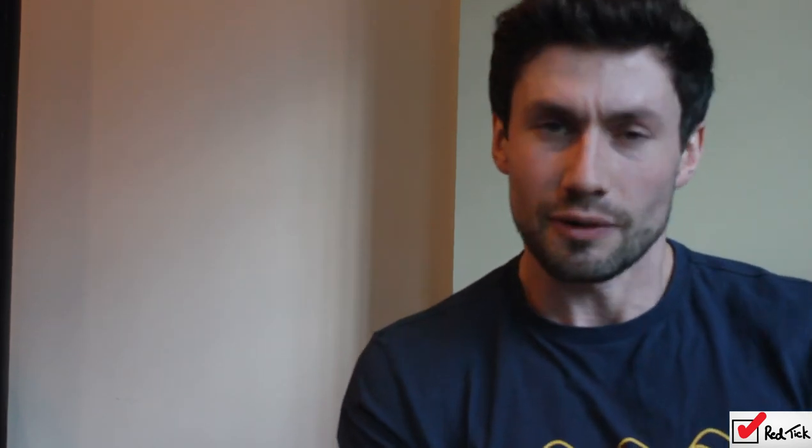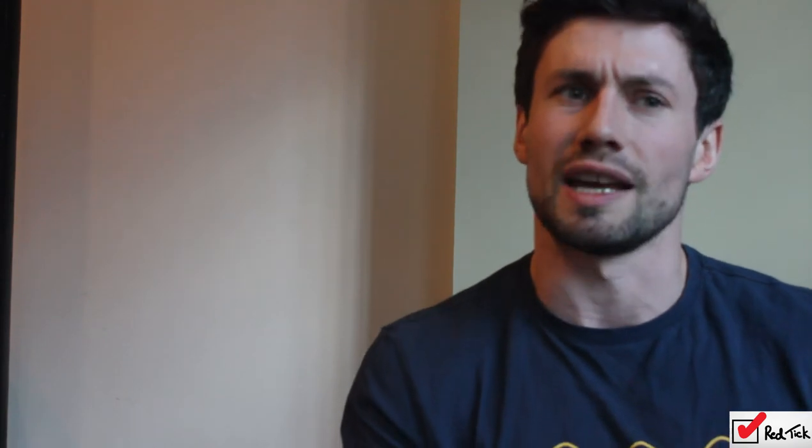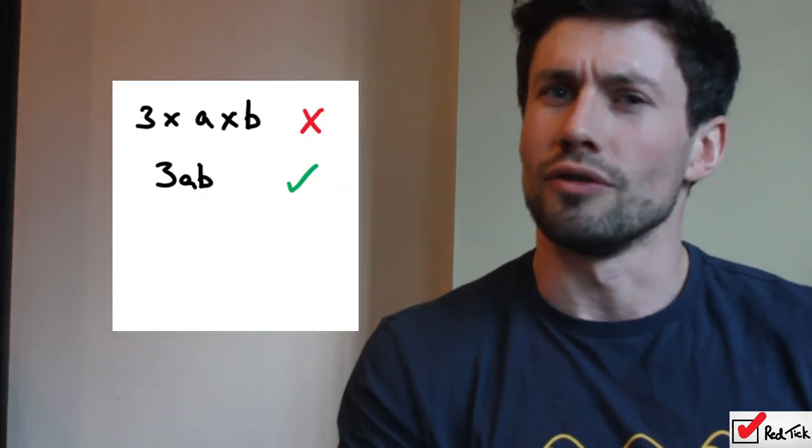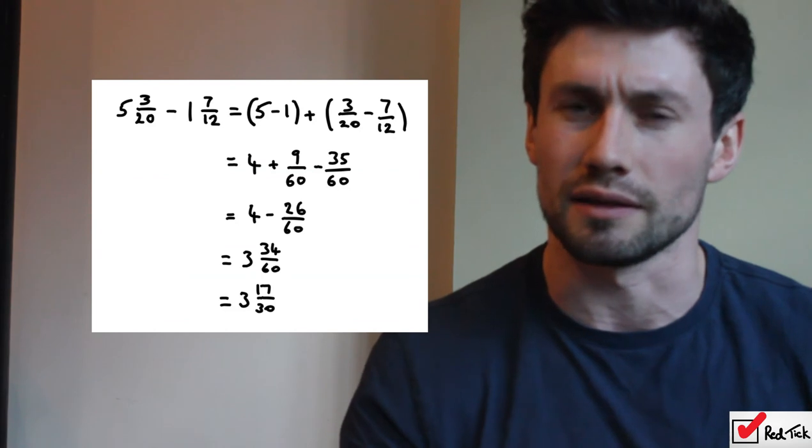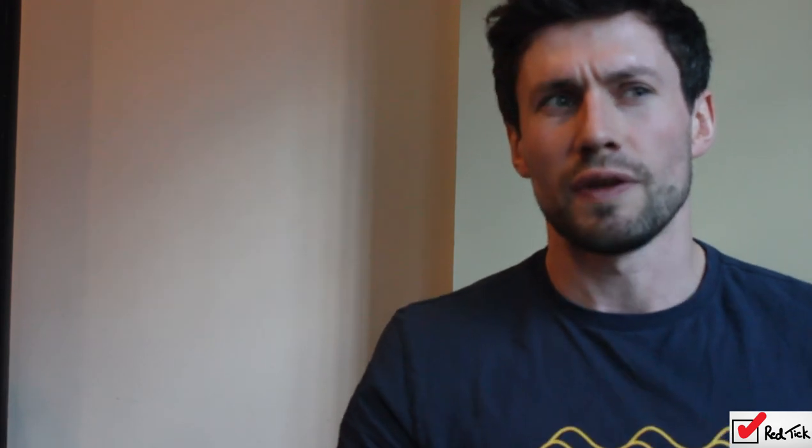If you do these four things — get rid of your division signs, use fewer multiplication signs, show your equations in the V-formation, and simplify your expressions in the panhandle structure — these four things will give your marker confidence in your ability and hopefully allow you to get a better mark.